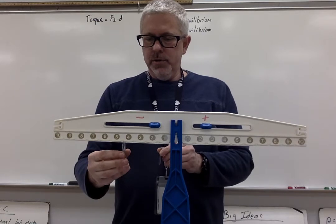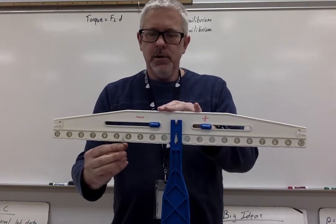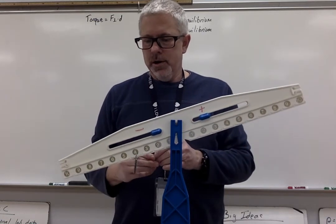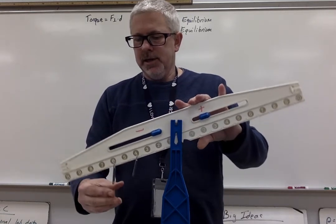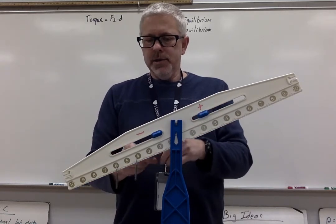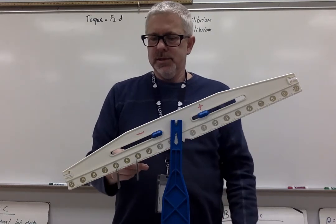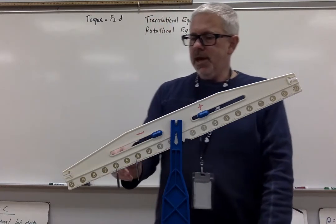So if I put one unit of mass on here at four, and another unit of mass on here at six, I have one times four plus one times six, I have a total of 10 units.